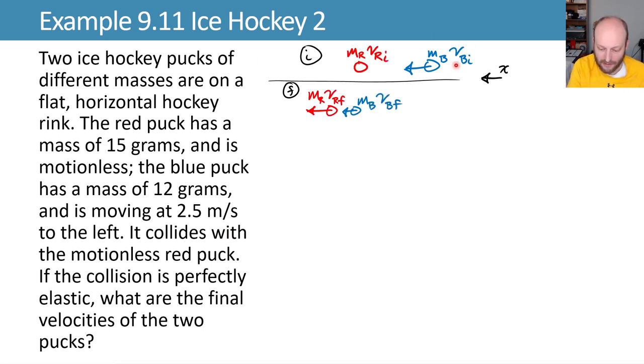We have one hockey puck traveling to the left that hits another hockey puck that's at rest, and then afterwards we have some unknown velocities. We know the masses of the pucks and the initial velocity of the blue puck coming in, and we want to know what the final velocity of the blue puck and the final velocity of the red puck are.